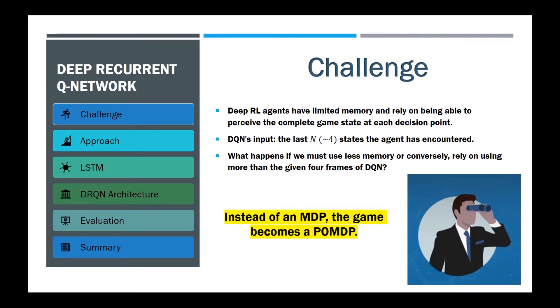DQN is trained using an input consisting of the last n states the agent has encountered. Therefore, any game that requires a memory of more than n frames will appear non-Markovian because the future game states and rewards depend on more than just DQN's current input. Instead of a Markov decision process, the game becomes a partially observable Markov decision process.